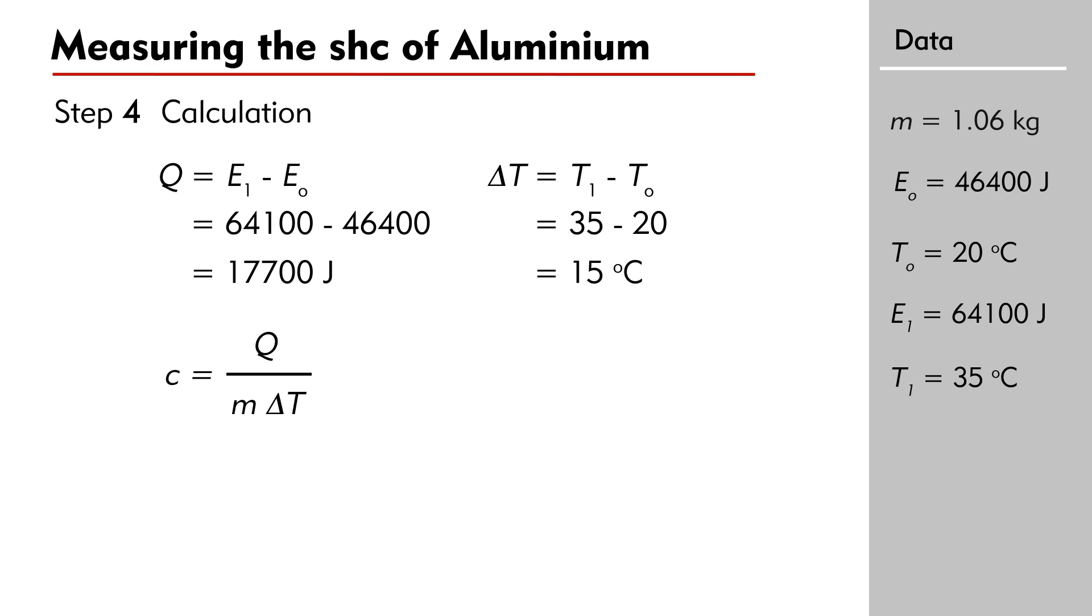We can now apply the formula c = Q/(m·ΔT) to calculate the specific heat capacity of aluminum. The result is c = 17,700/(1.06×15) = 1113 J/(kg·°C).